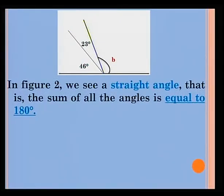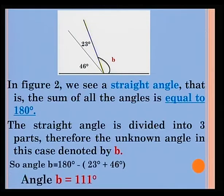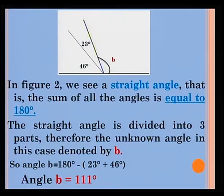In figure 2, we see a straight angle — that is, the sum of all the angles is equal to 180 degrees. The straight angle is divided into three parts. Therefore, the unknown angle, denoted by B, is 180 degrees minus the sum of 23 degrees and 46 degrees. Therefore, angle B is equal to 111 degrees.